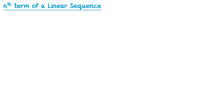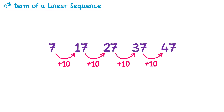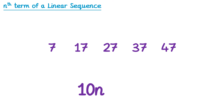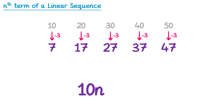Let's try another one. For this sequence, the difference between terms is add 10, so it must be a 10n sequence. We write the 10 times table above the sequence: 10, 20, 30, 40, 50. Then we see how we get from the 10n sequence to our sequence. To get from 10 to 7, this time it's subtract 3. And this works for all of the other terms as well. So the nth term must be 10n subtract 3.